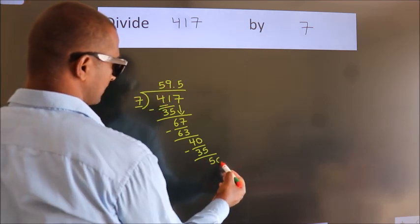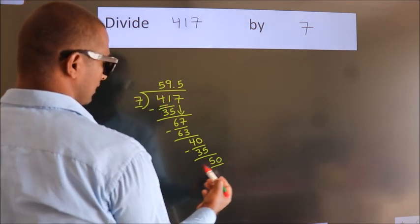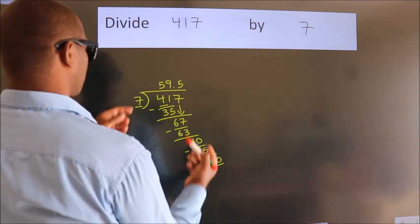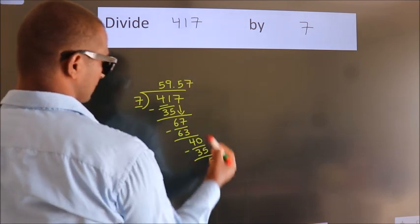So, directly take 0. So, 50. A number close to 50 in the 7 table is 7 sevens, 49.